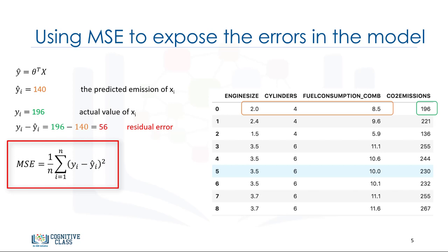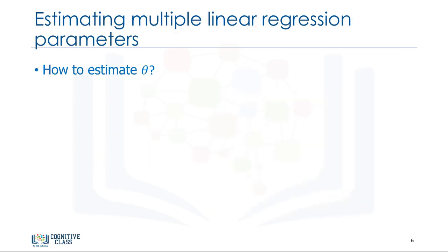Mathematically, MSE can be shown by an equation. While this is not the only way to expose the error of a multiple linear regression model, it is one of the most popular ways to do so. The best model for our data set is the one with minimum error for all prediction values. So, the objective of multiple linear regression is to minimize the MSE equation. To minimize it, we should find the best parameters theta. But how?